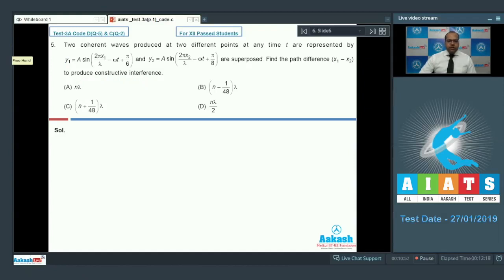So in order to have constructive interference, the phase difference between the two waves must be equal to 2nπ. So I can write 2πX1 by λ minus ωT plus π by 6.